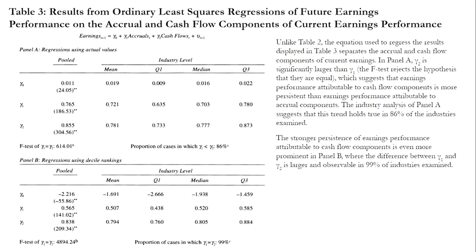Table 3 presents results from ordinary least squares regressions of future earnings performance on the accrual and cash flow components of current earnings performance. Unlike Table 2, the regression equation separates the accrual and cash flow components. The pooled and industry-level coefficients in both Panel A and Panel B show that gamma-2 is larger than gamma-1, indicating that earnings performance attributable to the cash flow component is more persistent than earnings performance attributable to the accrual component.